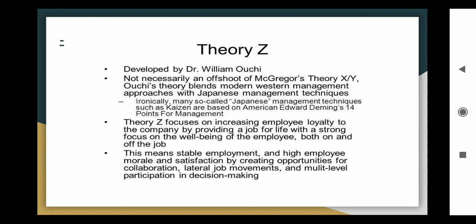Theory Z focuses on increasing employee loyalty to the company by providing a job for life with a strong focus on the well-being of the employee both on and off the job. As a result, it promotes high productivity, stable employment, high morale, and high satisfaction — achieved by creating opportunities for collaboration, lateral job movements, and multi-level participation in decision-making.